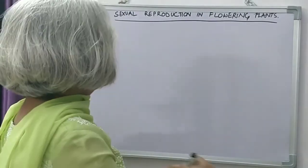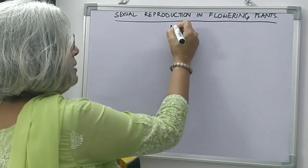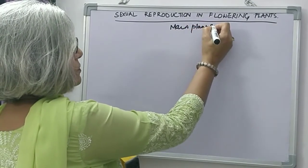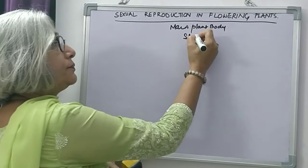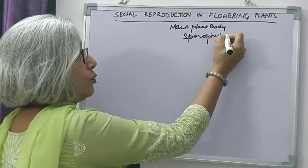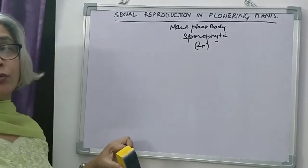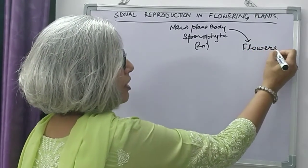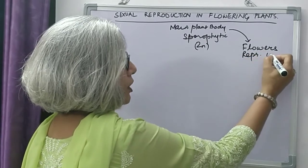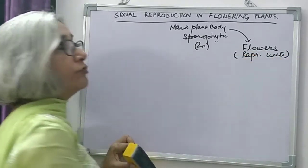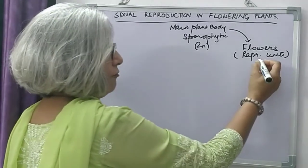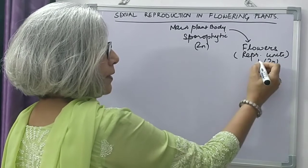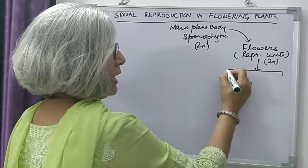Today I will explain the life cycle of a flowering plant. To begin with, the main plant body is sporophytic, meaning it has 2n number of chromosomes. This plant body produces flowers. Flowers are the reproductive structures or units of angiosperms. Flowers are also diploid and contain the male and the female part.